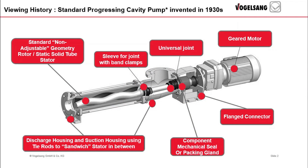This graphic represents a standard PC pump. The pump is driven by an electric motor, and the speed is normally reduced via the gearbox that you see in the graphic. Typical operating speed is less than 300 RPM. The output shaft of the gearbox is connected to the drive shaft of the pump and sealed via gland packing or mechanical seal.